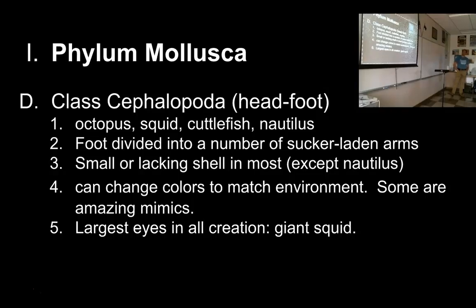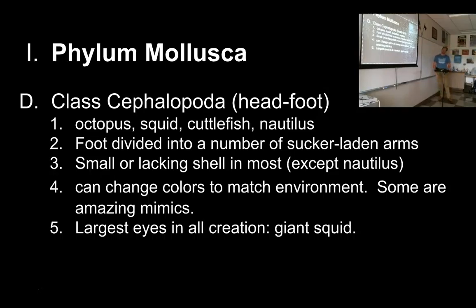The last class we're going to look at today is Cephalopoda. Cephalo means head, so these are head-foots — animals that have divided the muscular foot into a bunch of appendages worn around their mouth. Octopus, squid, cuttlefish, and nautilus all belong to this group. The foot is divided into a number of sucker-laden arms. They have a very small shell or no shell at all, except for the nautilus, which has a pretty awesome shell.